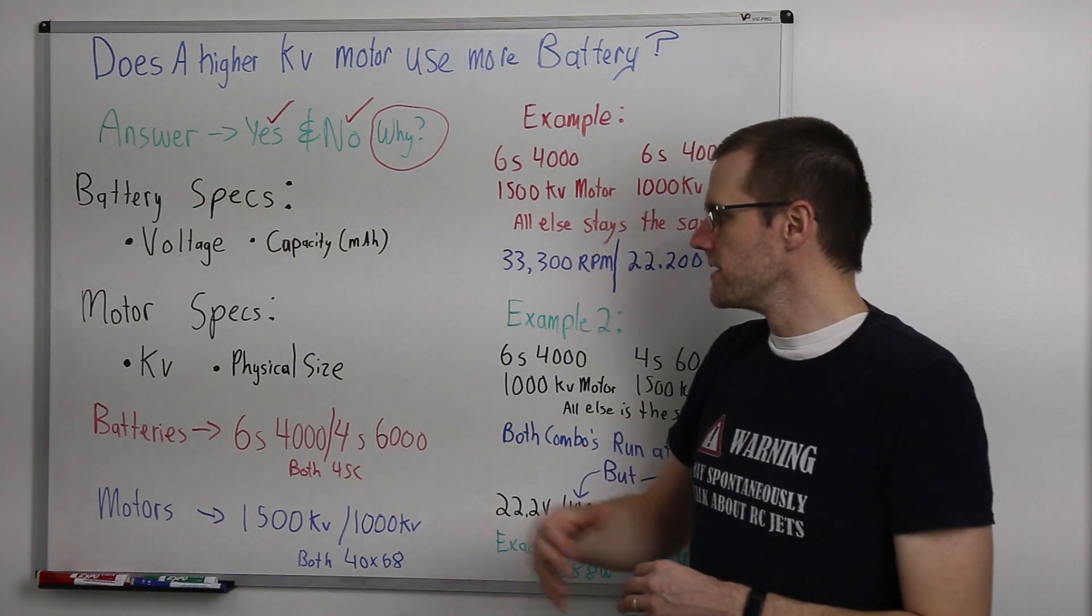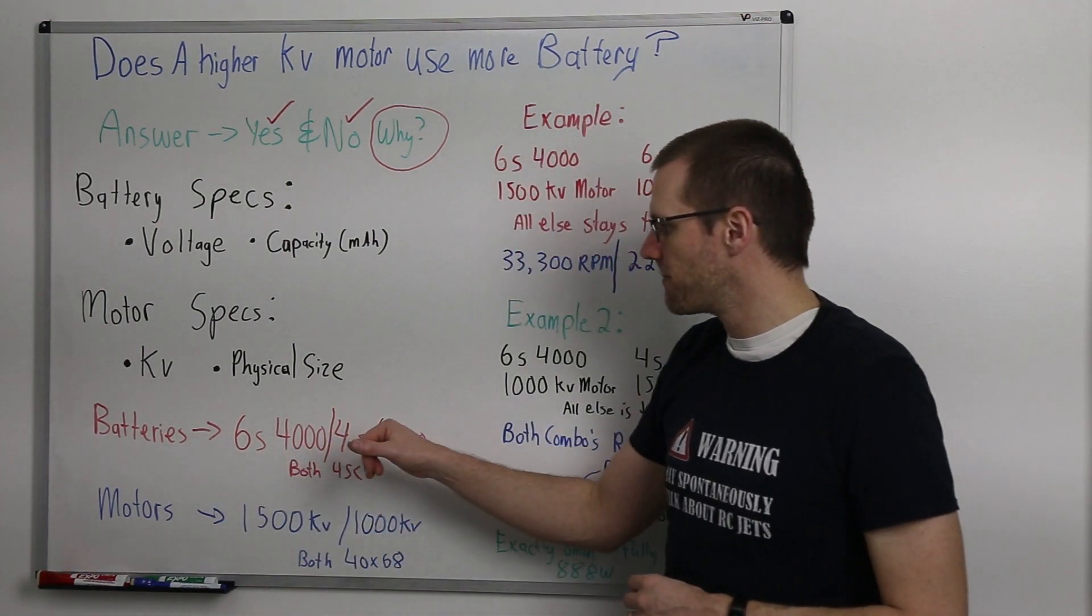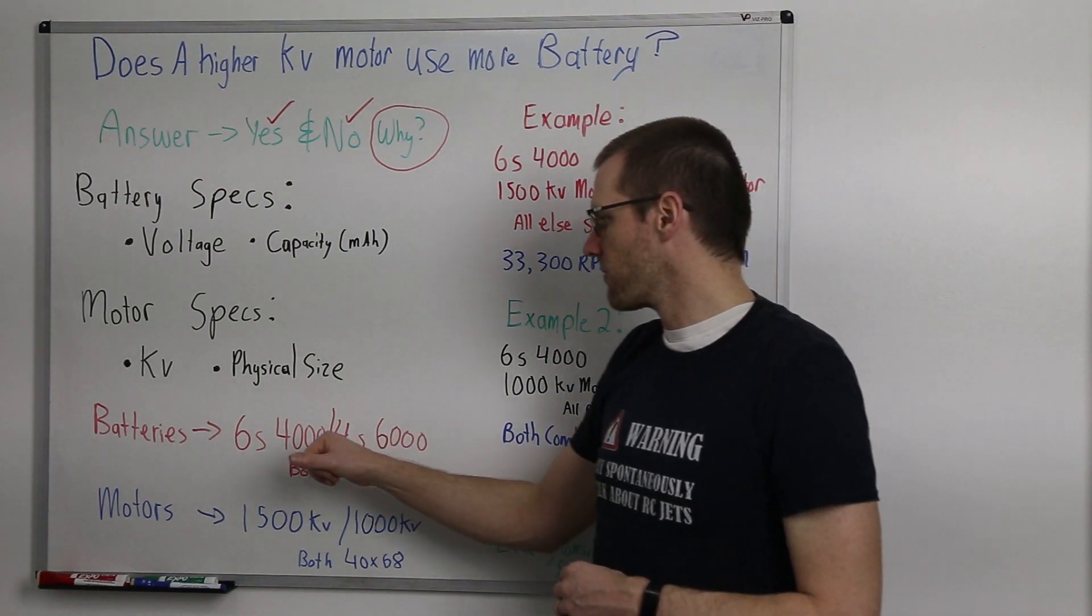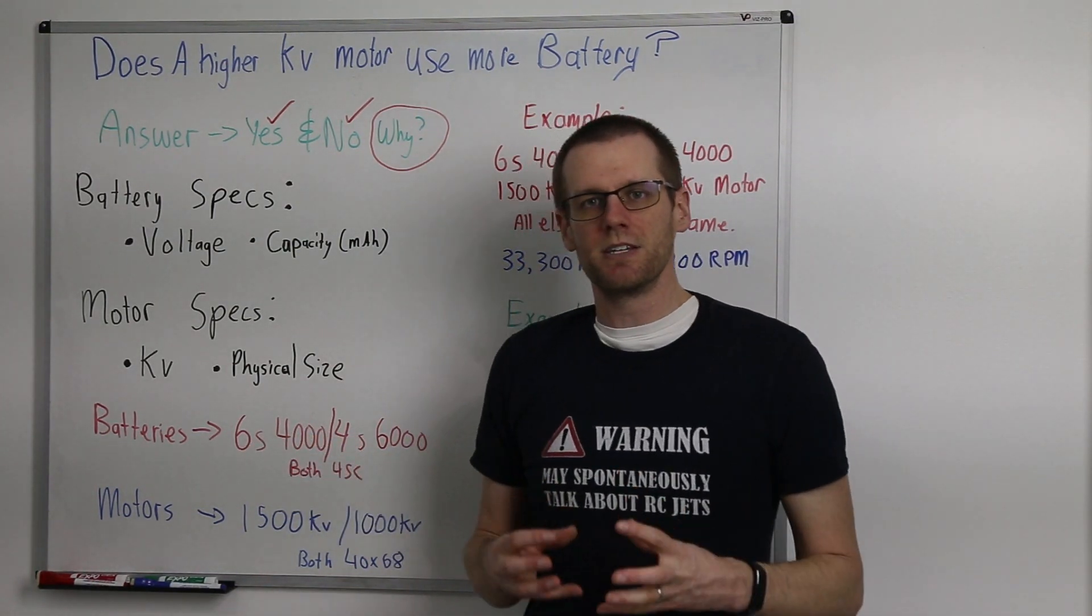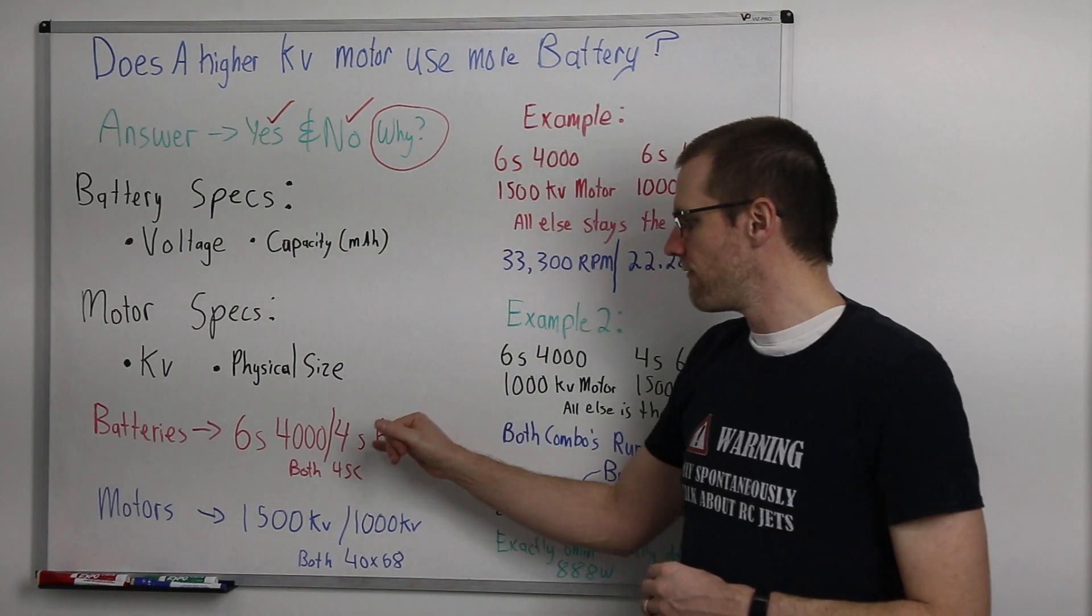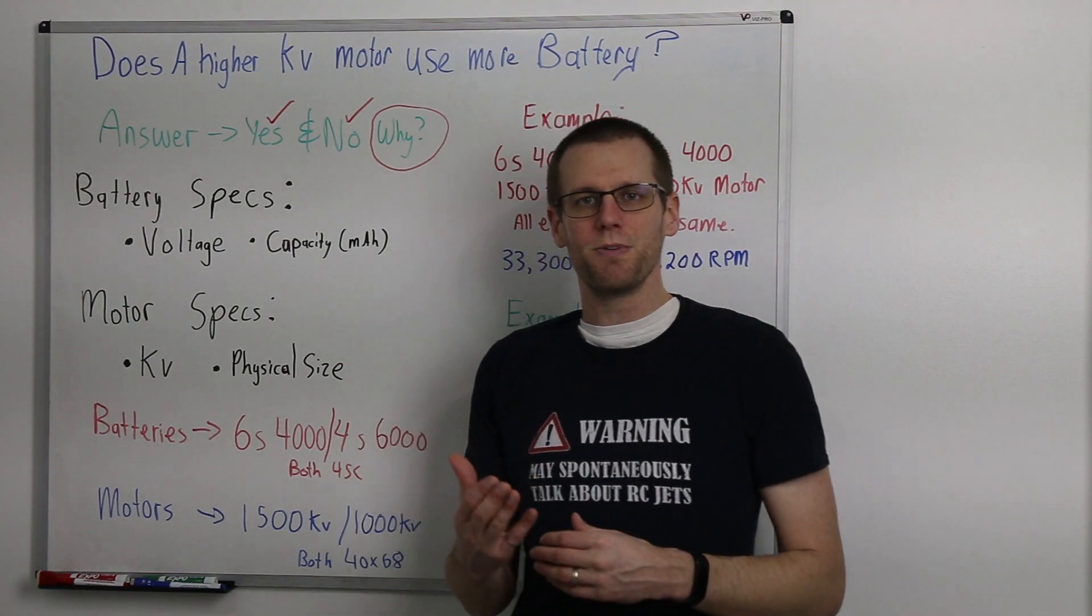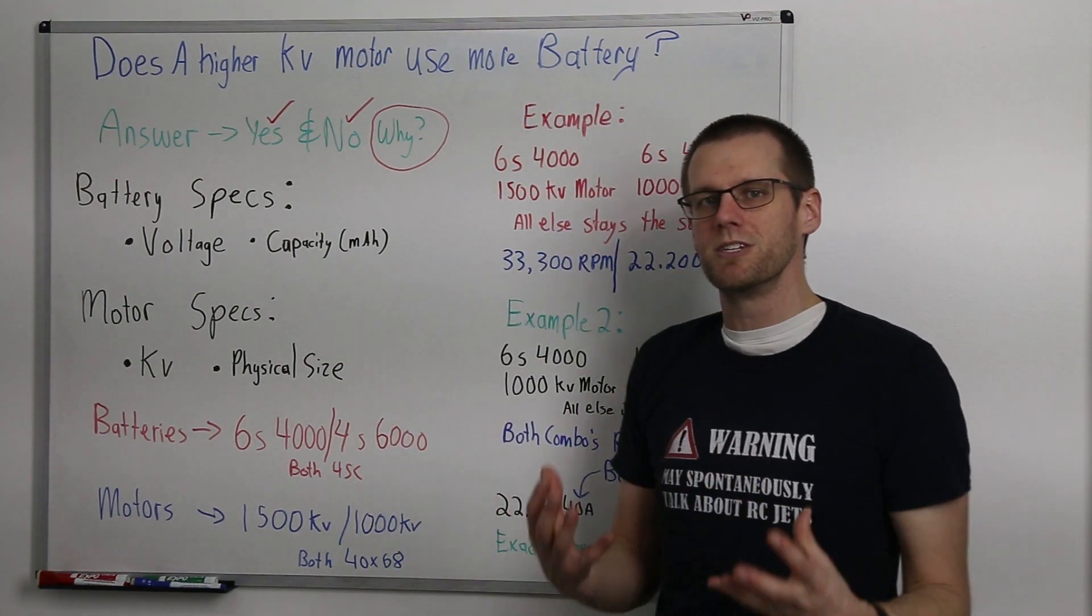Now when we talk about batteries, we're going to get some actual specifications here. We're going to give an example on the right-hand side of the board, and we're going to use these two batteries, a 6S 4,000 milliamp hour pack, as well as a 4S 6,000 milliamp hour pack. Now I know a couple of you are probably thinking, well what about the C rating?